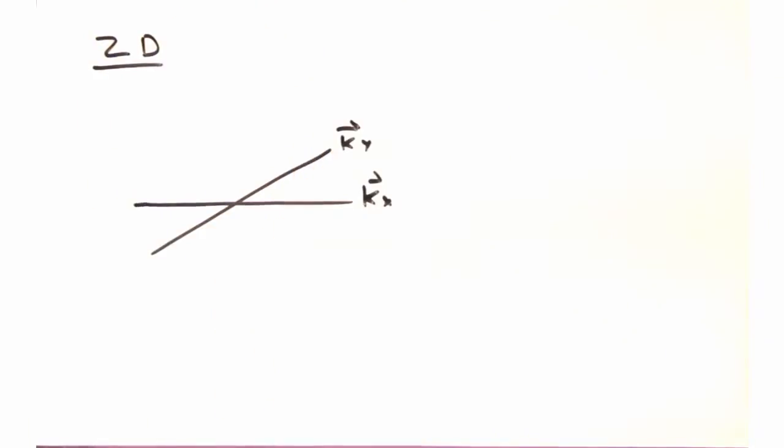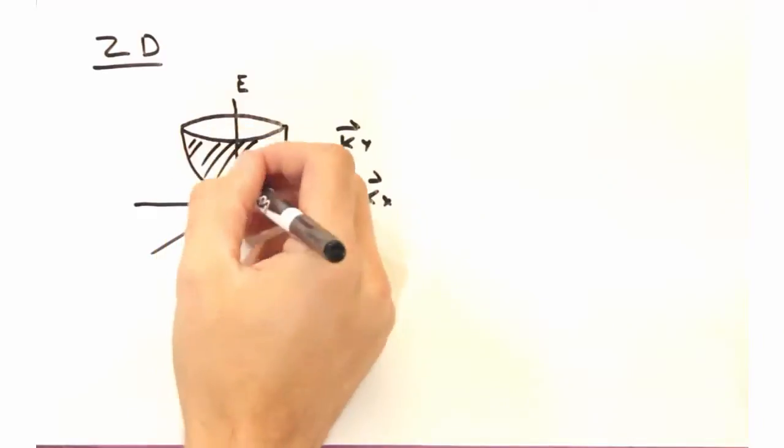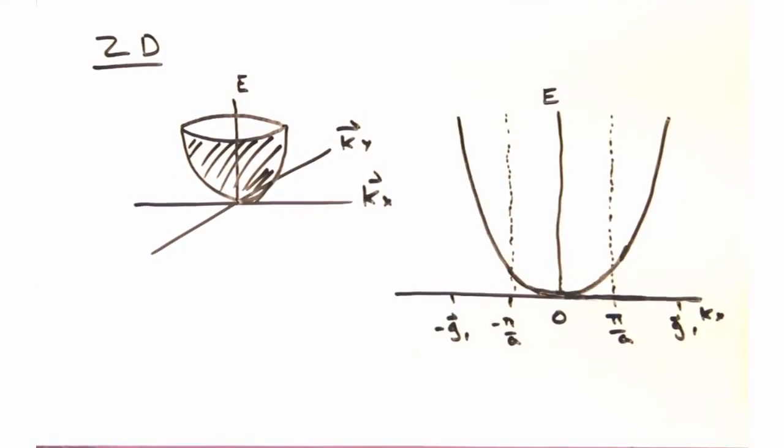Now in 2D, the original parabola looks like this, since it extends out into Kx and Ky. What do we see for the parabolas with origins at plus and minus 1G1? So it's going to be the same behavior as in the 1D case, and we can draw our dispersion along the Kx like so.